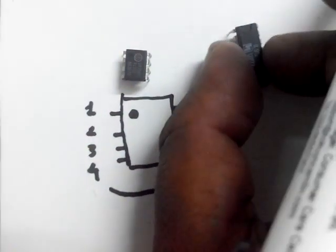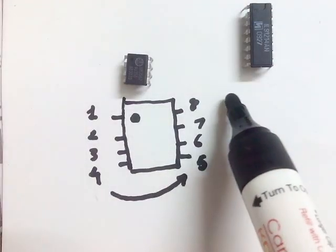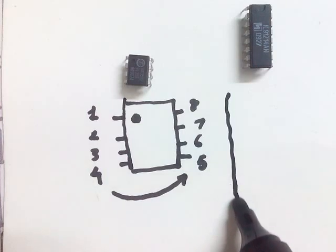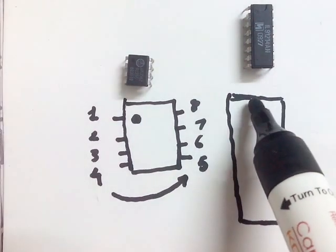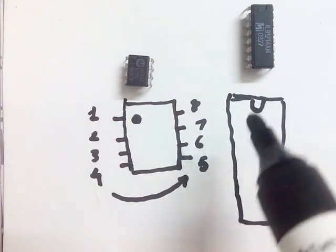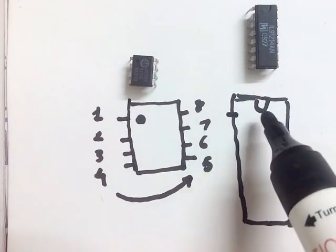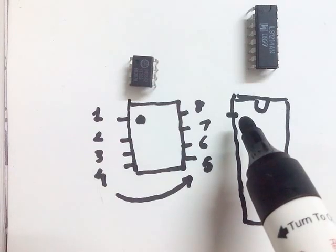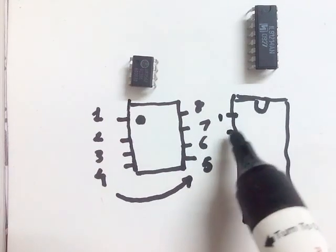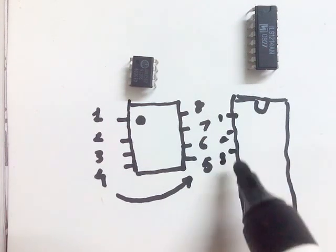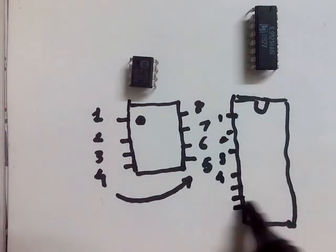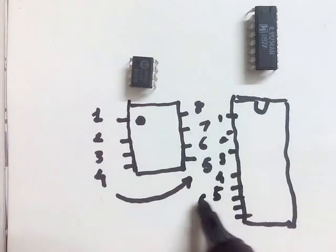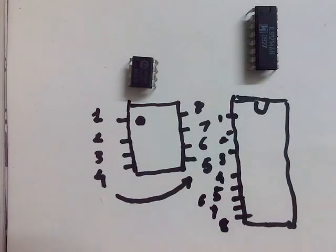Similarly, for the 16-pin IC, the same logic is applied. Here is the semi-circular mark. The topmost pin immediately on the left side of the mark is pin number one. Then pin number two, three, four, five, six, seven, and the last one on this side is pin number eight.